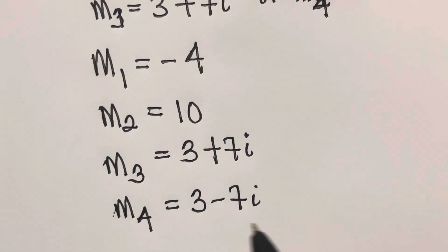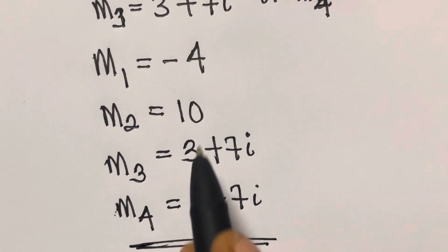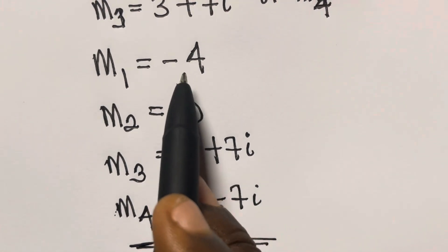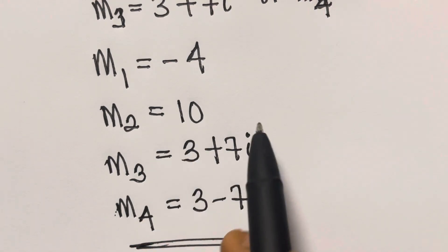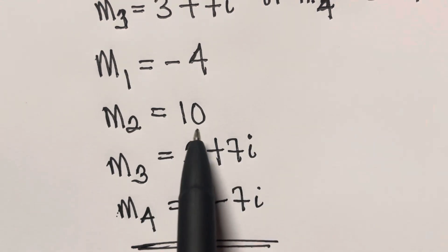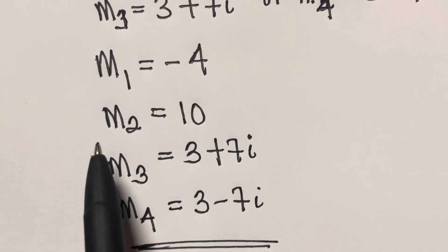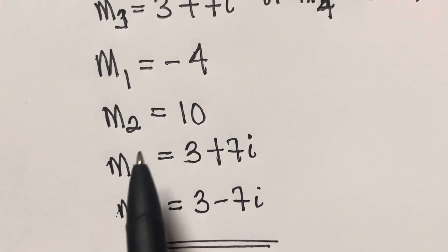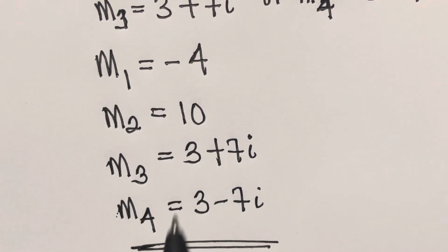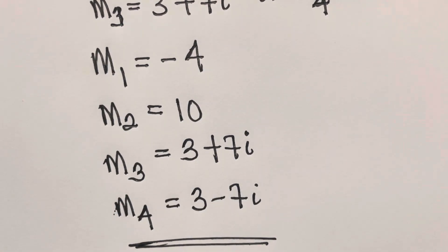In summary, our four solutions are m1 equals minus 4, m2 equals 10, m3 equals 3 plus 7i, and m4 equals 3 minus 7i. You can verify by substituting m equals minus 4 or m equals 10 into the original equation and confirming the left-hand side equals the right-hand side. Thank you for watching — please leave a comment, like, and subscribe to stay updated.